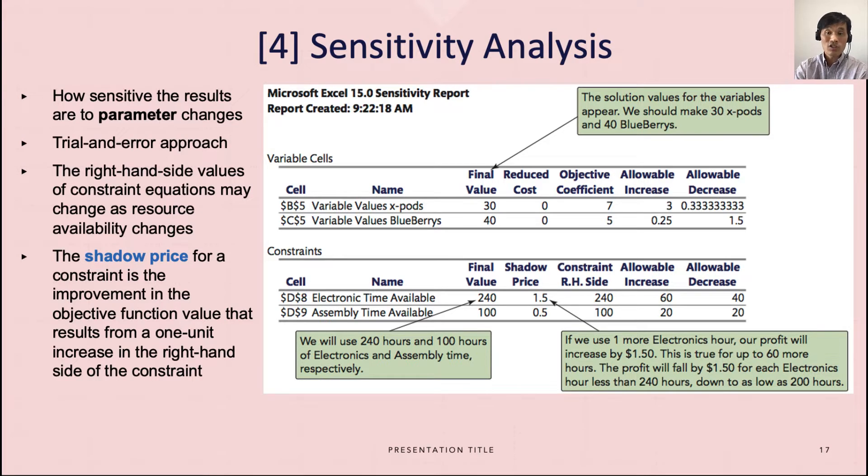Or if additional resources such as 10 labor hours or 3 hours of machine time should become available, will this change the problem's answer? Such analyses are used to examine the effects of changes in three areas: contribution rates, technological coefficients, and available resources.